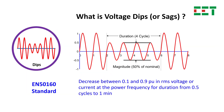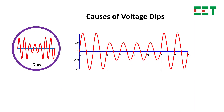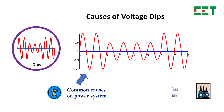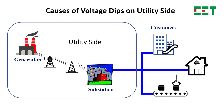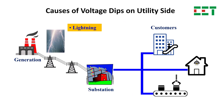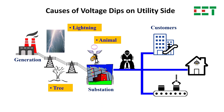According to the EN50160 standard, voltage dips are short-term drops in voltage. They can occur due to disturbances on the utility side, for example, ground faults from fallen trees, lightning strikes, or sudden load changes.